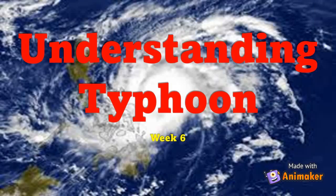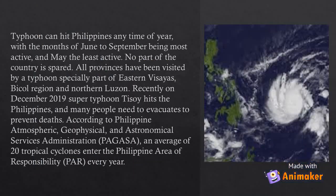This lesson will help you understand the concept of typhoon formation. After going through this lesson, you are expected to explain how a typhoon develops and how it is affected by land masses and bodies of water. Typhoons can hit the Philippines any time of the year, with the months of June to September being most active and May being the least active. No part of the country is spared — all provinces have been visited by a typhoon, especially parts of Eastern Visayas.